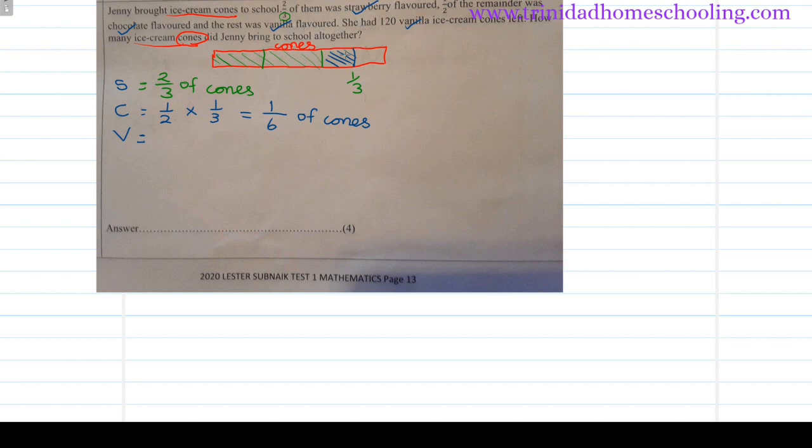So the rest here is another half of that one-third, which would also be one-sixth of the cones. Let's see what we didn't use. We used this half here, okay, tick them off as you go. This 120 we didn't use yet. They said 120 ice cream cones are left and they are vanilla, so that one-sixth of the cones is 120.